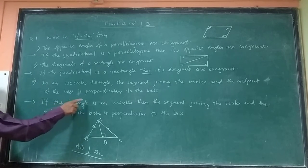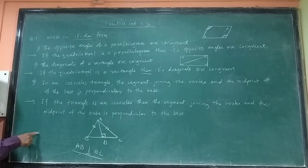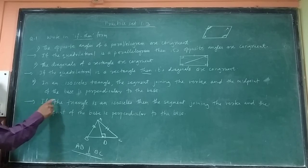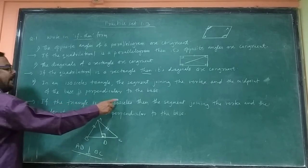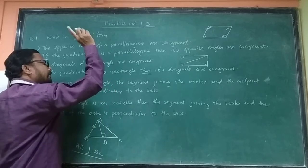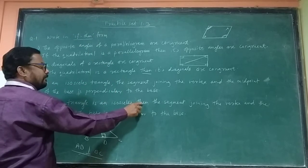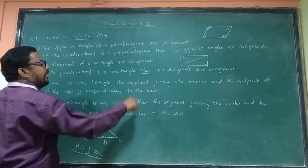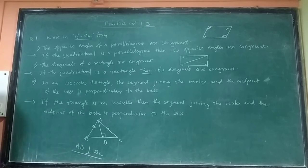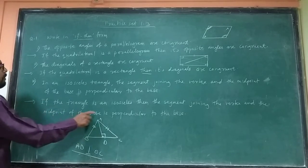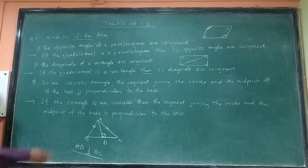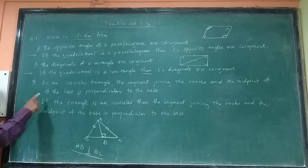If the triangle is isosceles, then the segment joining the vertex and the midpoint of the base is perpendicular to the base.